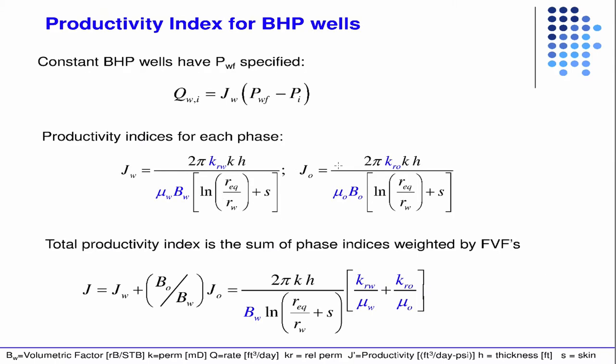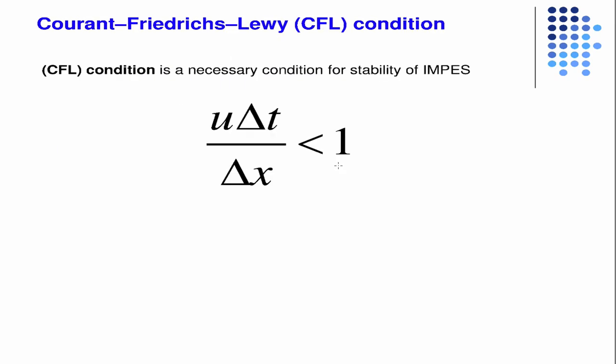So those are just the definitions of the productivity indices. This is exactly what we had before, except you have this extra mobility ratio terms for the relative permeabilities and other things, just the subscripts right now. And yeah, the last sort of key thing is that you have this CFL condition.